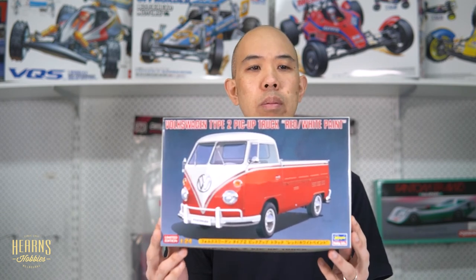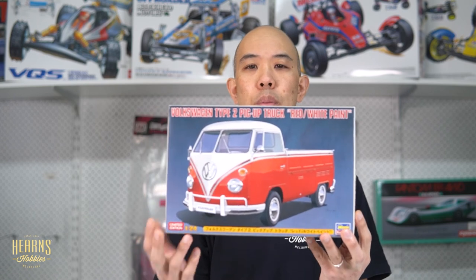So there we go so that is my open box review of the new Hasegawa type 2 Volkswagen combi pickup ute. That's really nice kit it's really quite nostalgic and I remember helping a friend get one of these locally in Australia and shipping it back to Japan. Very unique looking car. So there you go that is the Hasegawa 1-24 scale type 2 combi ute so thanks for watching.